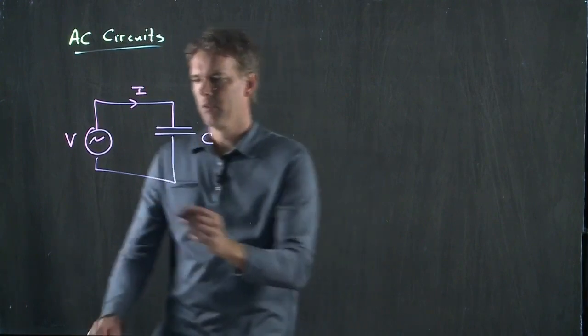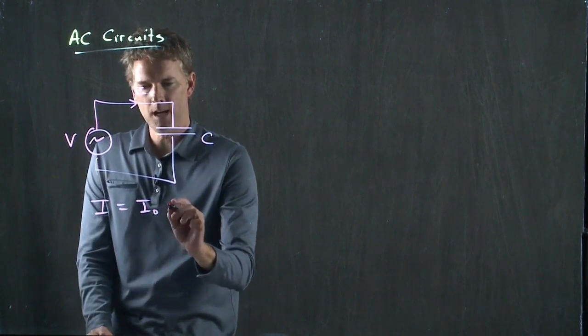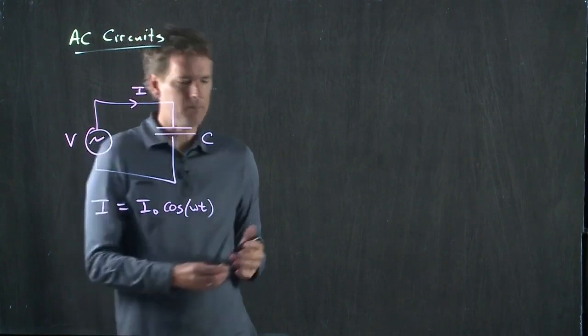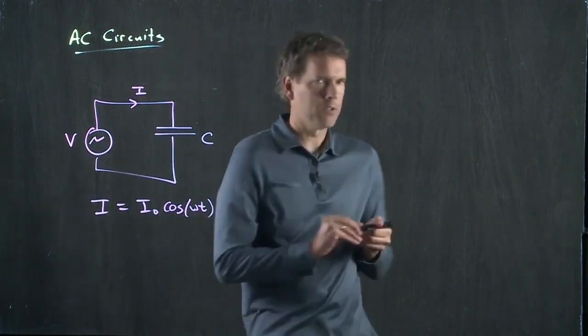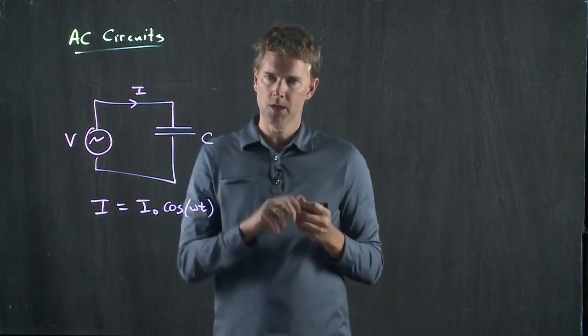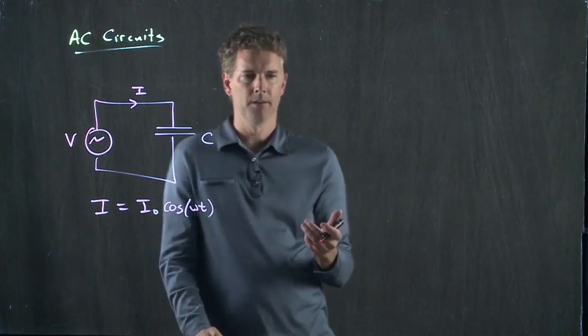And that current goes sinusoidally just like we had before. I equals I naught cosine of omega T. But when I think about the voltage and the current in relation to the capacitor, we're going to have something similar that we had in the inductor.